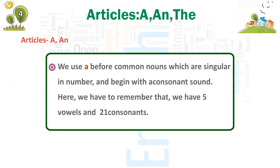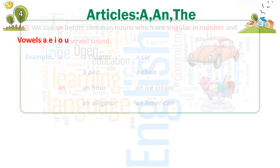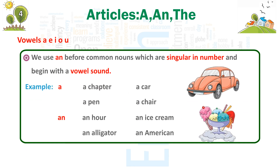Articles A and AN. We use A before common nouns which are singular in number and begin with a consonant sound. We have to remember that we have 5 vowels — A, E, I, O, U — and 21 consonants. We use AN before common nouns which are singular in number and begin with a vowel sound.